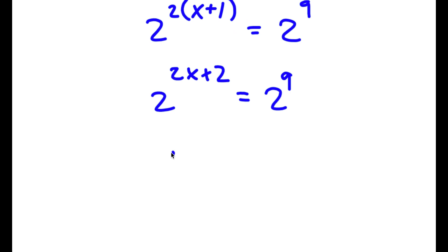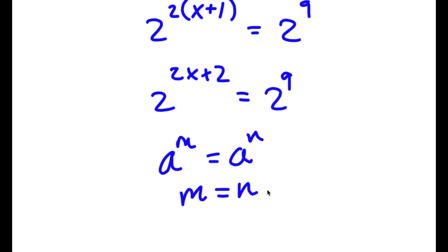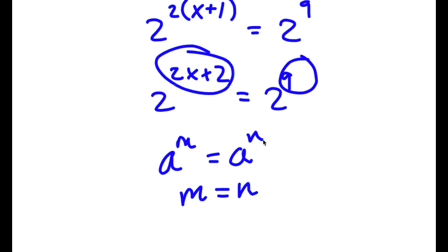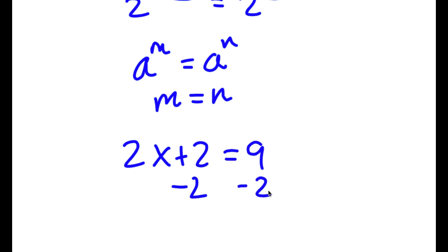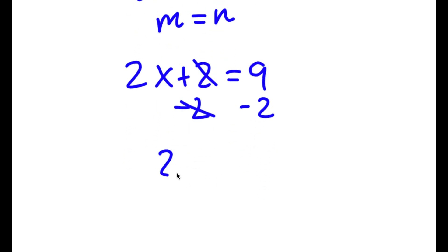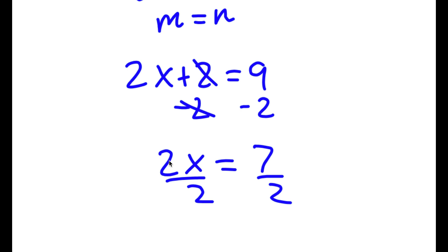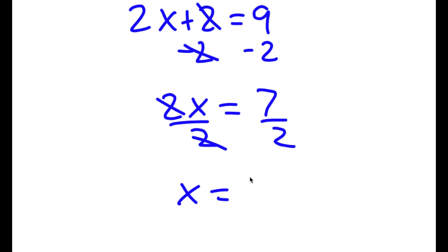If I have a to the power of m is equal to a to the power of n, this means that m is equal to n. So in this case, 2x plus 2 is equal to 9. Subtracting 2 from both sides, I get 2x equals 7. Dividing both sides by 2, I get x is equal to 7 over 2.